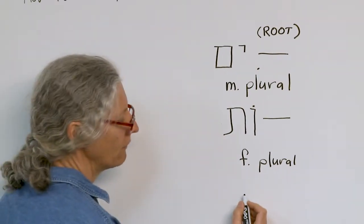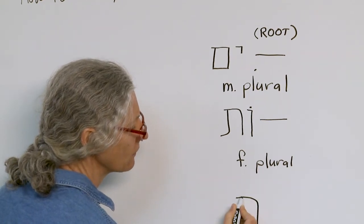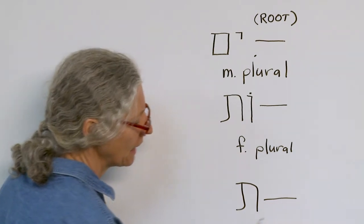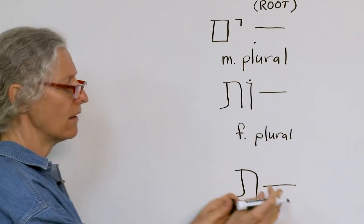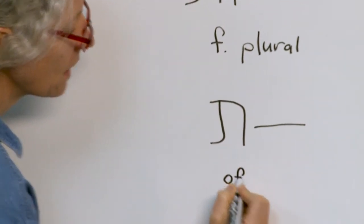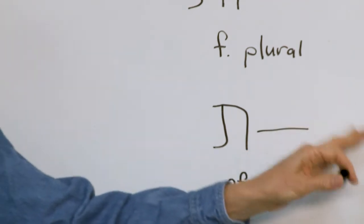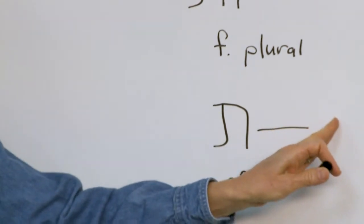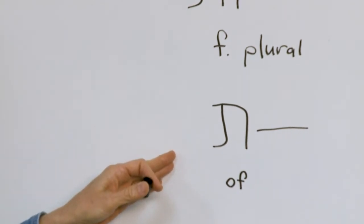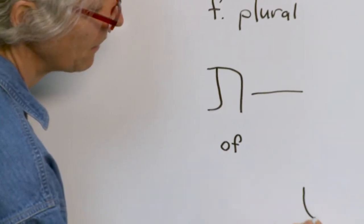Then, very frequently, you'll see a tav at the end of a word, and very frequently, it'll make it the root plus of. So the tav at the end is sort of like the sheen at the beginning. Sheen means of, if it's used as a prefix. The tav means of when it's used frequently as a suffix.